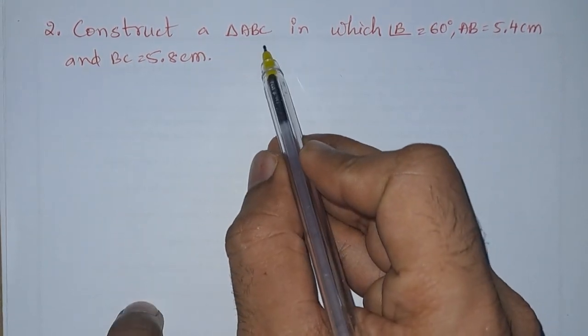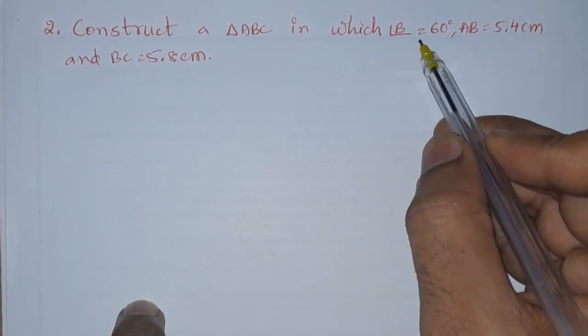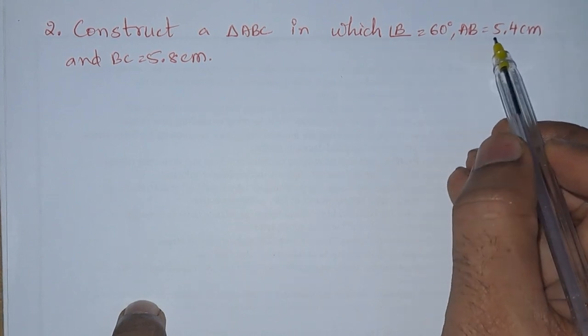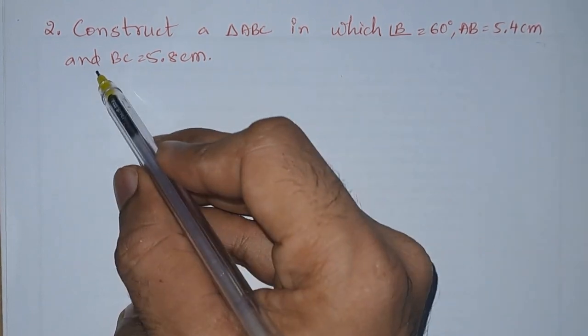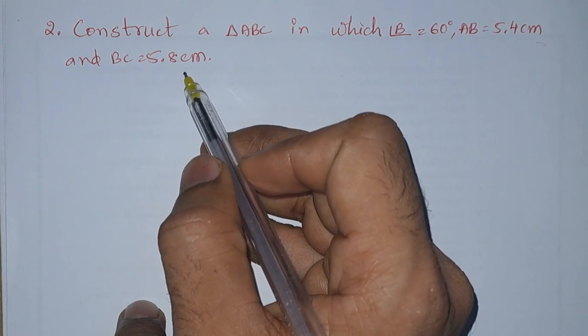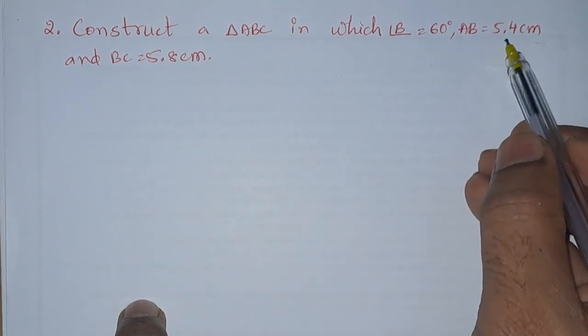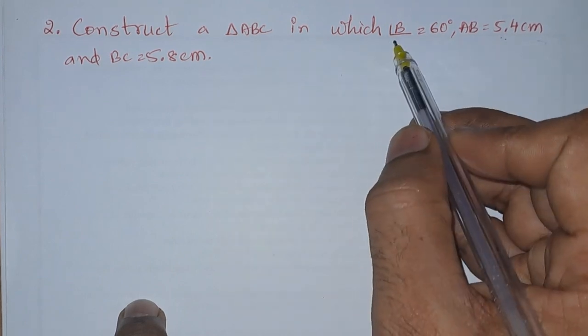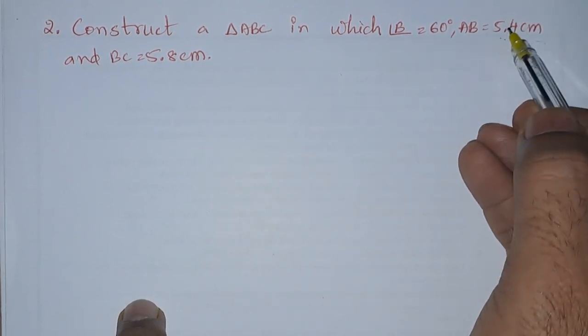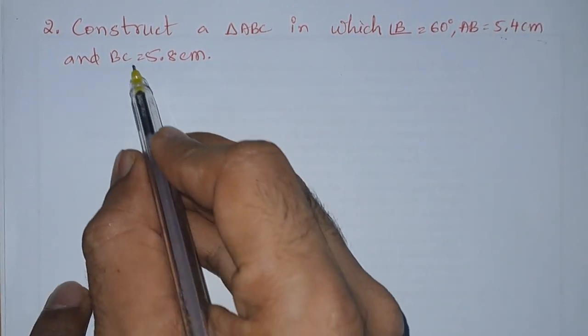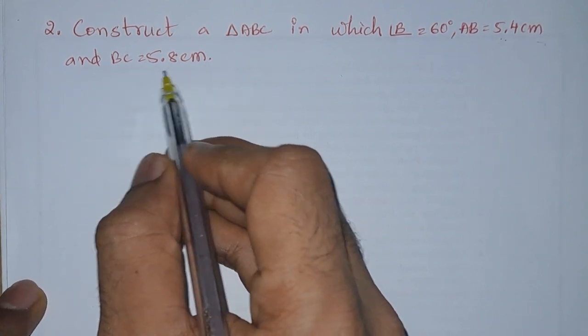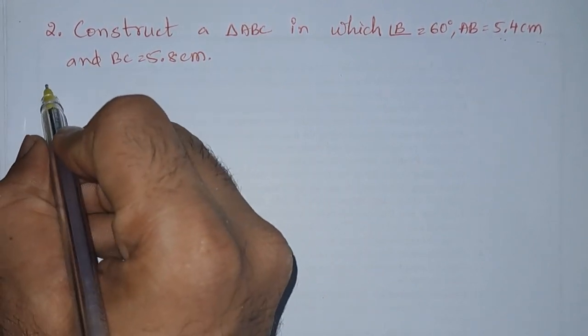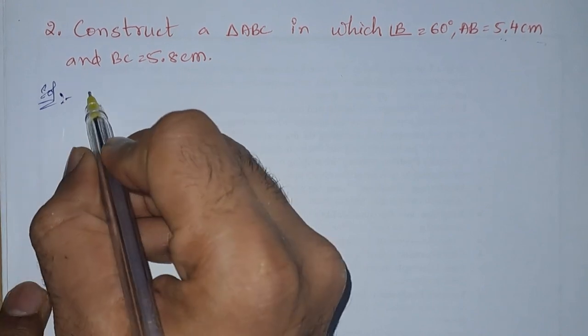Second problem: construct a triangle ABC in which angle B equals 60 degrees, AB equals 5.4 centimeters, and BC equals 5.8 centimeters. This is the side-angle-side type of construction. They have given two sides and one angle. In this, we will see the longest side. We are having BC; this is the longest one. So first of all, we will write down what is the given information.